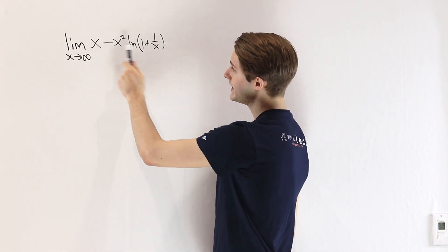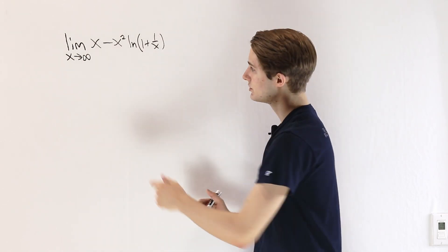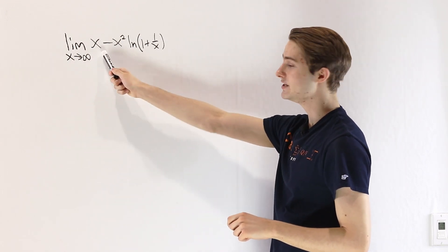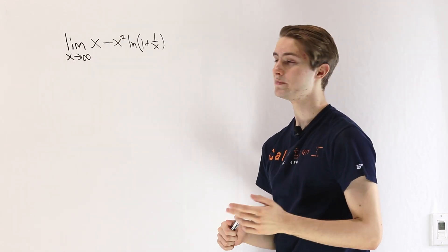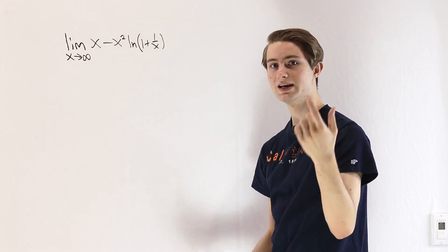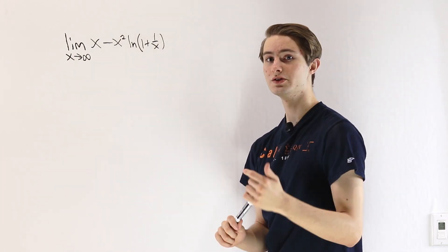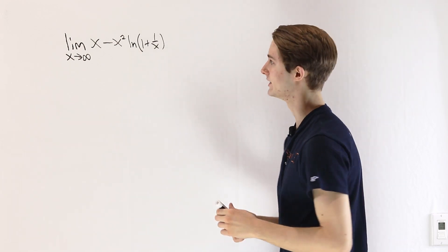We also have to notice that we can't split this limit up into the sum of its two elements because the limit as x approaches infinity of x is infinity. So we can't split that up because that limit doesn't exist. We have to consider it as a whole to see whether it converges to a finite value.